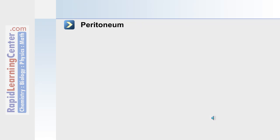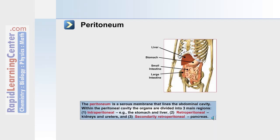The majority of the digestive system lies within the peritoneum, the serous membrane that lines the abdominal cavity. The organs within the peritoneal cavity are divided into three main regions: intraperitoneal, where for example the stomach and liver are; retroperitoneal, where the kidneys and ureters are; and secondarily retroperitoneal, as in the pancreas.